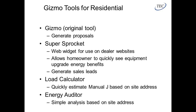The four main tools built into this suite start with Gizmo, which is the proposal generator tool. You basically drag pieces of equipment onto a worksheet, and it builds your proposal. You can search for a specific furnace, AC, or accessory, drag it all into one sheet, and it builds a proposal for you.